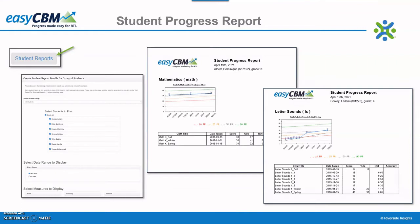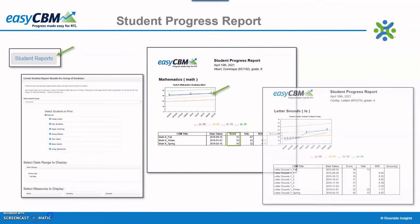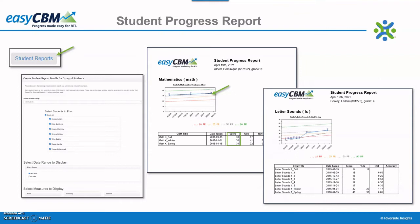The report shown on the left is an example of such a report. This student took the basic math benchmark assessment three times this year and got correct 31 questions, 33 questions, and 34 questions respectively. The blue dots on the graph indicate the number of questions correct, and the location indicates the comparison with the percentile score. The gray line shows the 50th percentile or average score on the assessment over time. The report on the right shows the progress monitoring probes that the student took for letter sounds. The x-axis indicates the assessment administration dates and the y-axis displays the number of letter sounds per minute the student got correct. The colored lines show the percentage norms and the student score based on the norms. The student progress report is within both the teacher and administrator views.